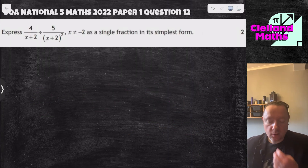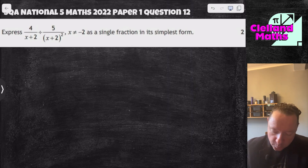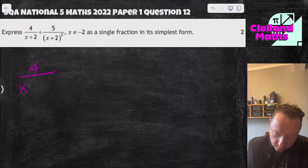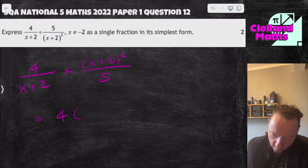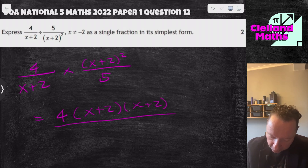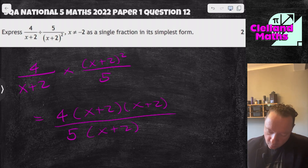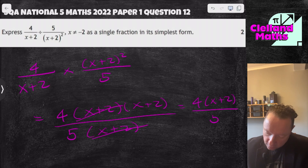SQA National 5 Maths 2022, Paper 1, Question 12: 4 over (x+2) divided by 5 over (x+2) squared. Change to times and flip: 4 over (x+2) times (x+2)² over 5. Expand the squared bracket as (x+2)(x+2). One (x+2) on top cancels with the (x+2) on the bottom, leaving 4(x+2) on top over 5. No need to expand. Done.